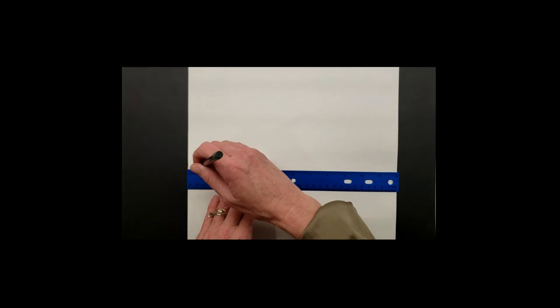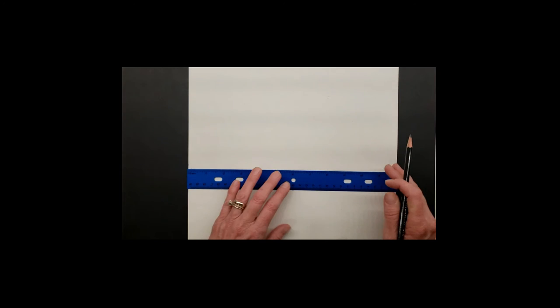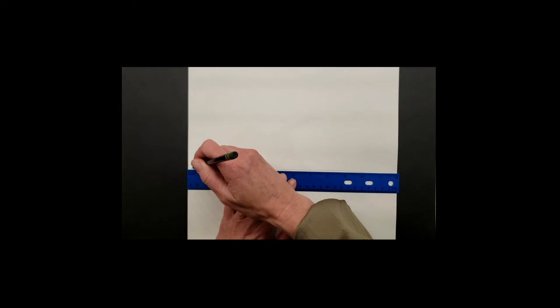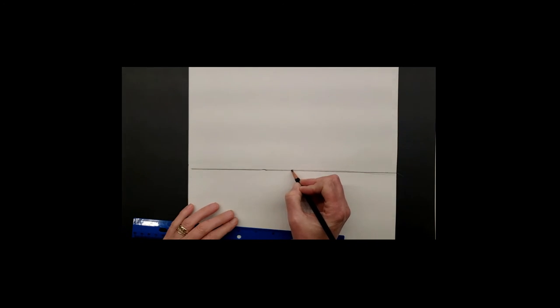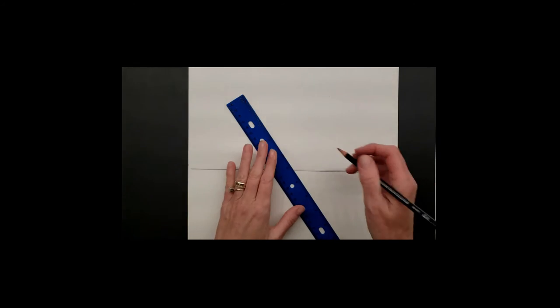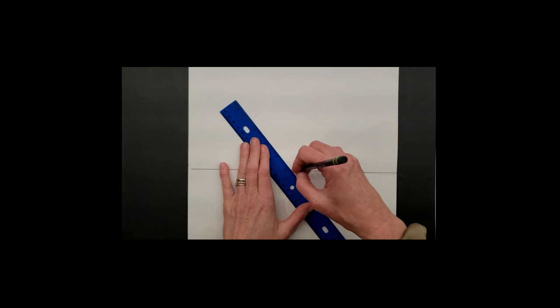I'm going to be drawing rather darkly just so it shows up on camera for you. You will probably want to use light lines because we are going to be erasing some. Right in the center of this horizon line, I want you to put a vanishing point. That's that dot right there in the center. This vanishing point is the spot where everything is going to disappear to. This is the furthest spot on the horizon. So we're going to use this point as a reference for everything else that we draw in our artwork.